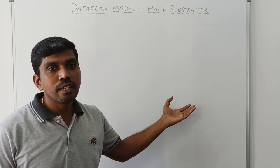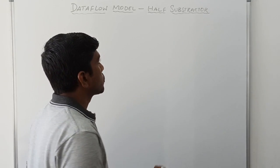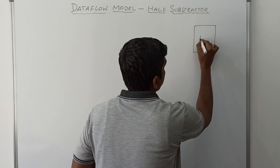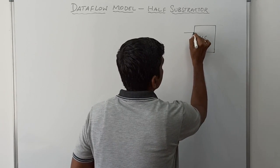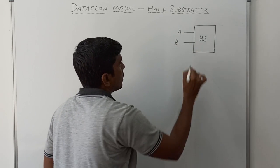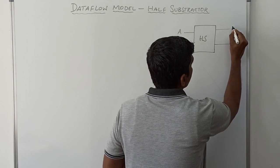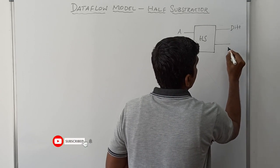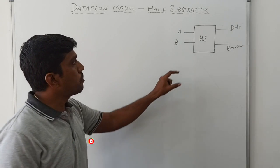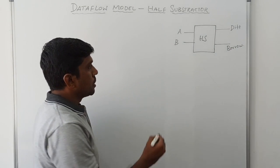First I draw the block diagram. This is the block diagram for the half subtractor. It has two inputs, one namely called A and another one namely called B. The half subtractor releases two outputs — one is difference and another one is borrow. So this block diagram has two inputs and releases two outputs: difference and borrow.